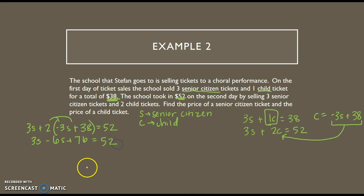It has to equal 52. 3s and negative 6s are my like terms. So I get negative 3s plus 76 equals 52. I want to get s by itself. So I'm going to subtract 76.